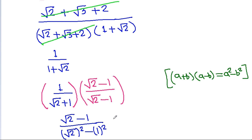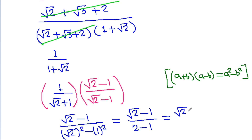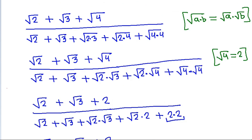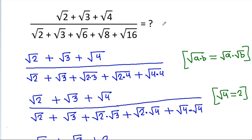That gives (√2 − 1) divided by (2 − 1), which equals (√2 − 1) divided by 1. So the final answer is √2 − 1.